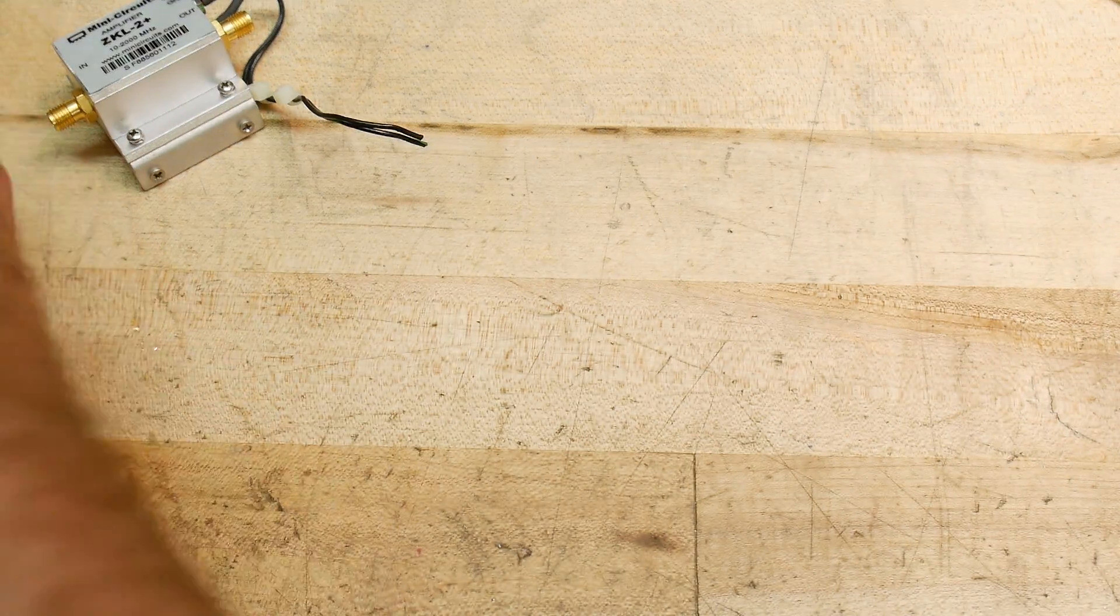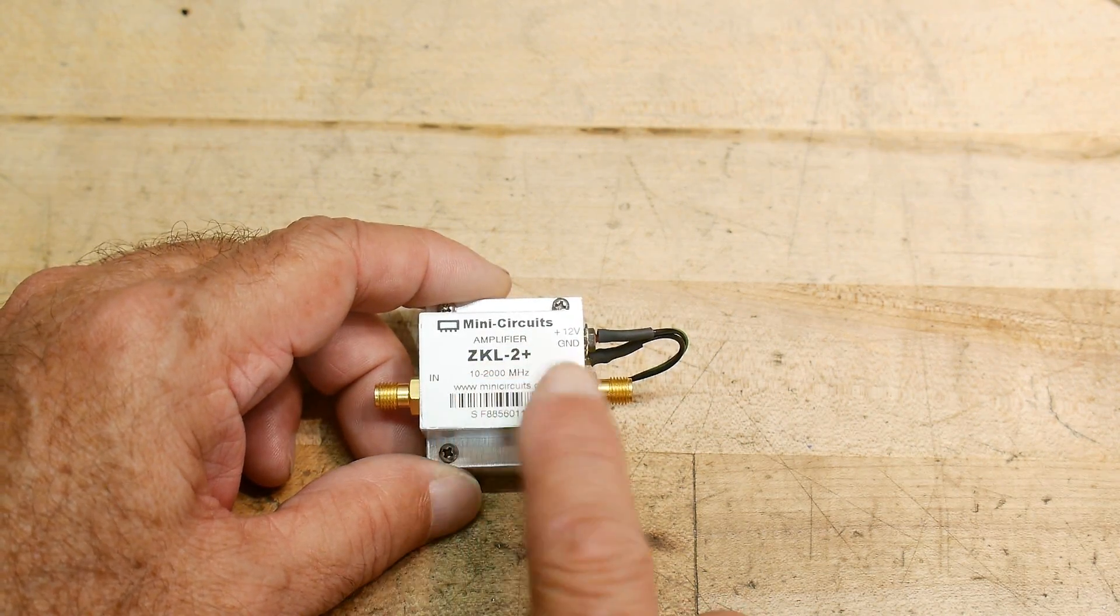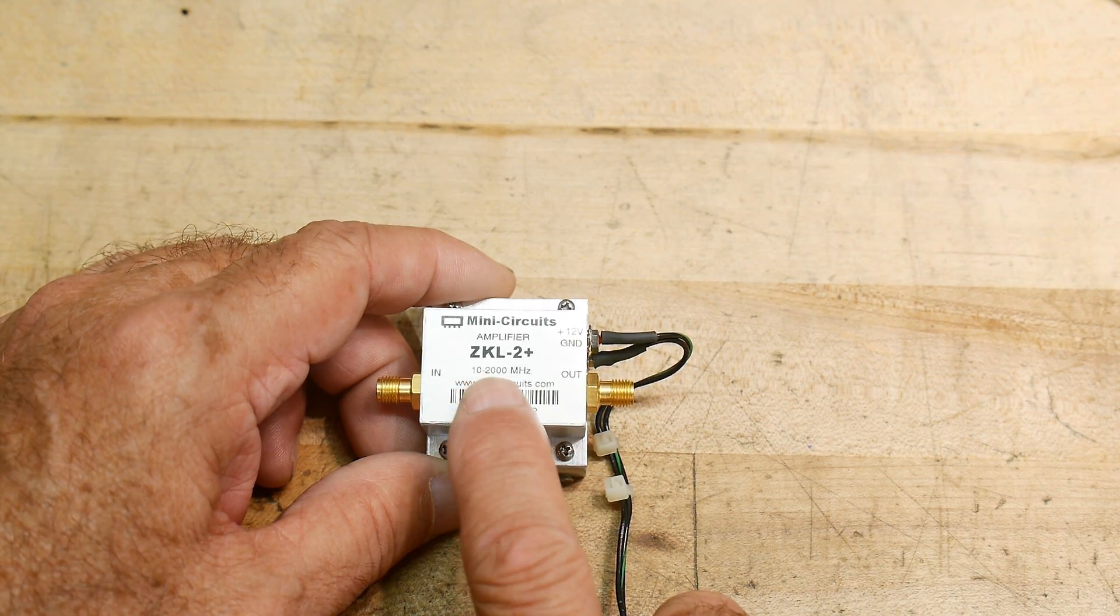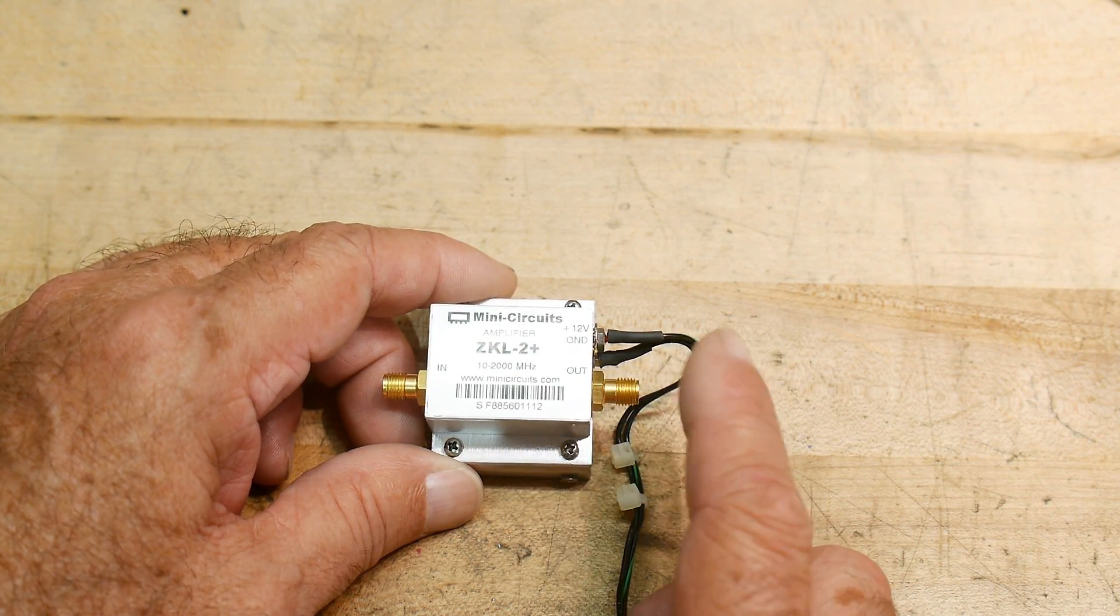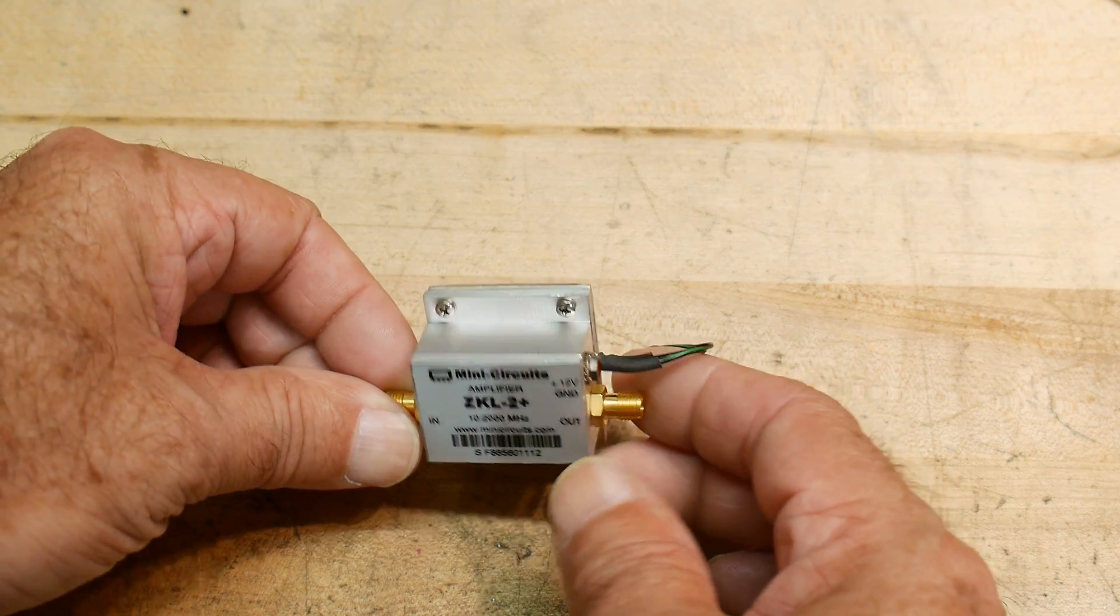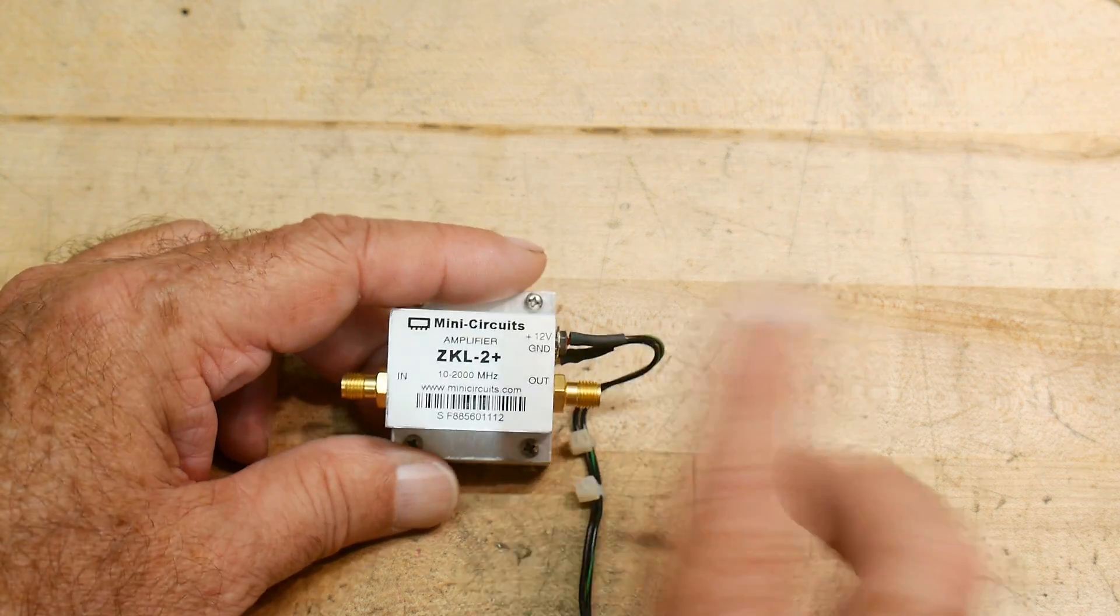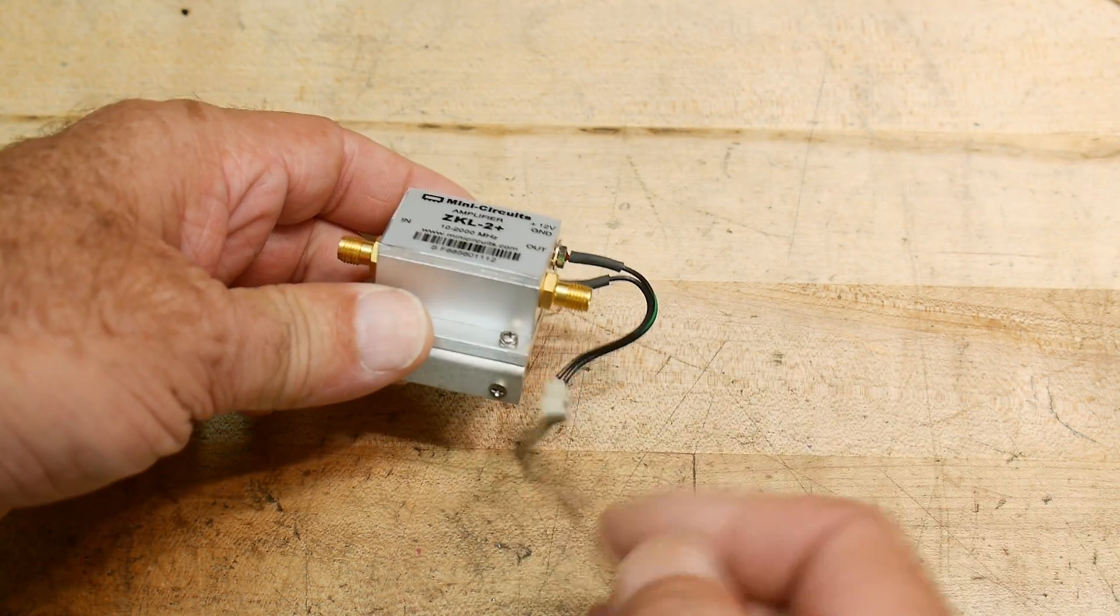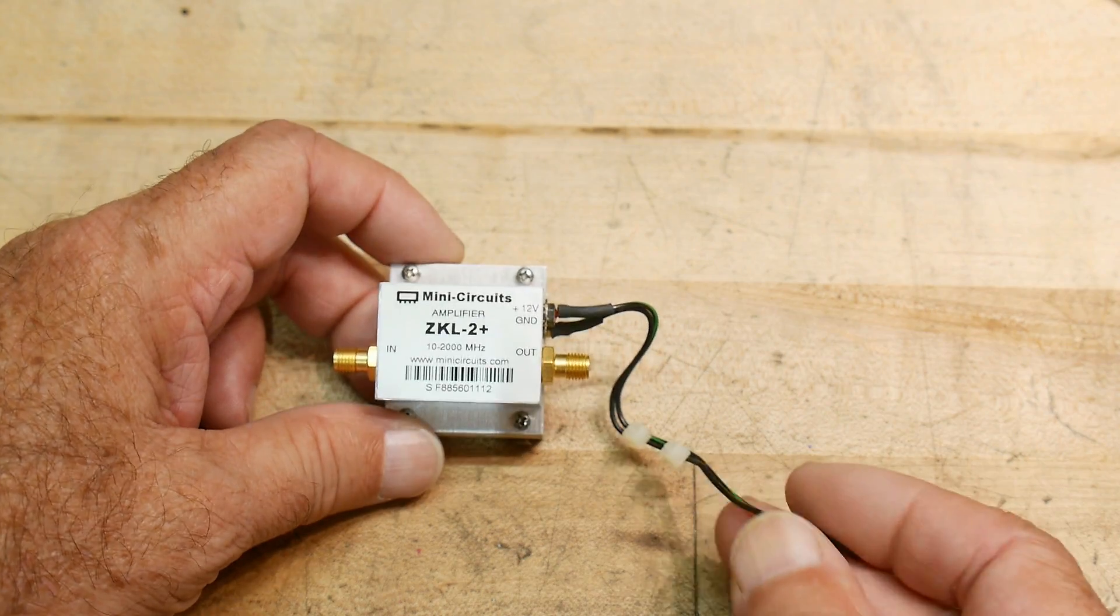But the amplifier I want to play with today is this one. This one is a Mini Circuits ZKL-2 plus, 10 to 2000 megahertz, so very broadband, very nice, 12 volts. I don't know if this is 20 dB or 30 dB, we'll test it. These are pulled out of equipment. They're actually quite expensive - around maybe two hundred dollars. This was on eBay for 20 bucks, so I thought that was a pretty good deal.